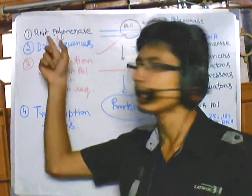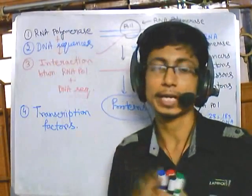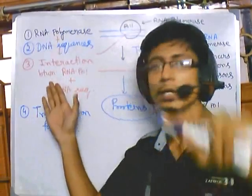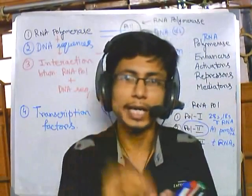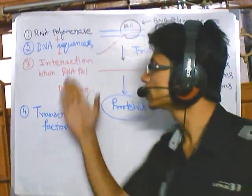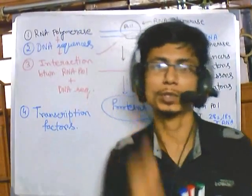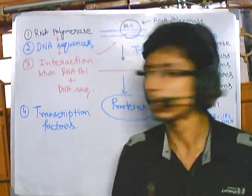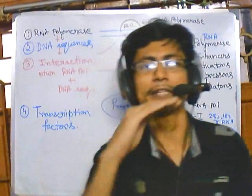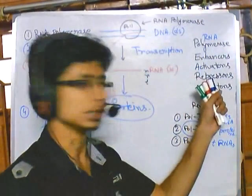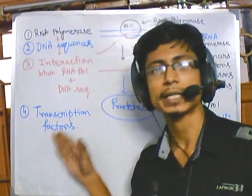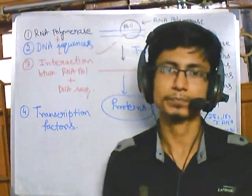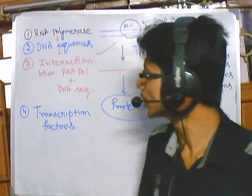The most important thing is the interaction between RNA polymerase and the DNA sequence. This interaction depends upon transcription factors — some help establish the interaction strongly and positively, causing transcription to occur faster and in a positive way, while others called repressors have a negative effect. Transcription factors play a very vital role in eukaryotic transcription.